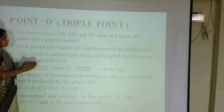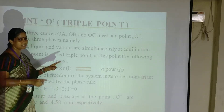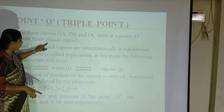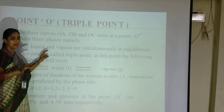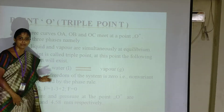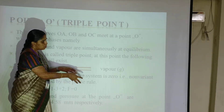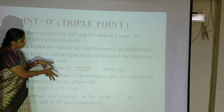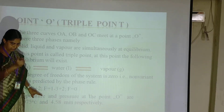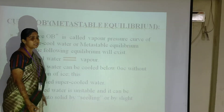The three curves are joined at a point called point O — the triple point. Three curves are attached at this point. At point O we have three phases: solid, liquid, and vapor, all in equilibrium with each other. When you apply the phase rule at this point, the degree of freedom is 0 — that is invariant.